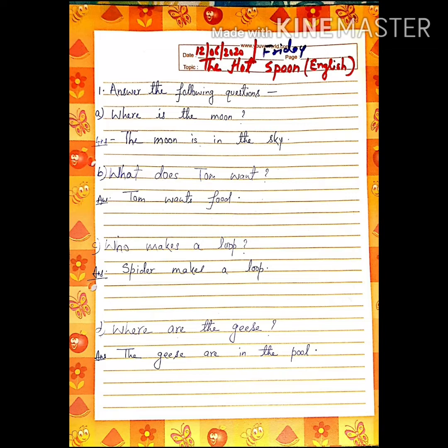Now come to question number C. Who makes a loop? This is again a question, so end it with a question mark. Who makes a loop? W-H-O, who, M-A-K-E-S makes a loop, L-O-O-P. And the answer is: Spider makes a loop. Remember, on the wall? Spider was making a loop. So write: Spider makes a loop. S-P-I-D-E-R spider, M-A-K-E-S makes a loop, L-O-O-P.